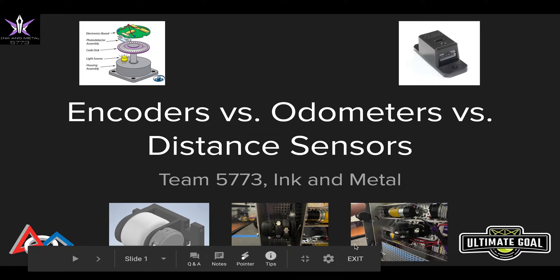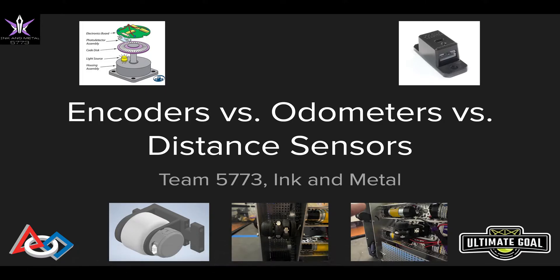Hey guys, this is Rishabh from FTC Team 5773 in Ink and Metal, and today I'll be talking about three different types of navigation around the field in the FIRST Tech Challenge, and those are encoders, odometers, and distance sensors. I'll talk about the functionality of each of these types of navigation, their pros and their cons, and also the situations in which they would be the most useful.